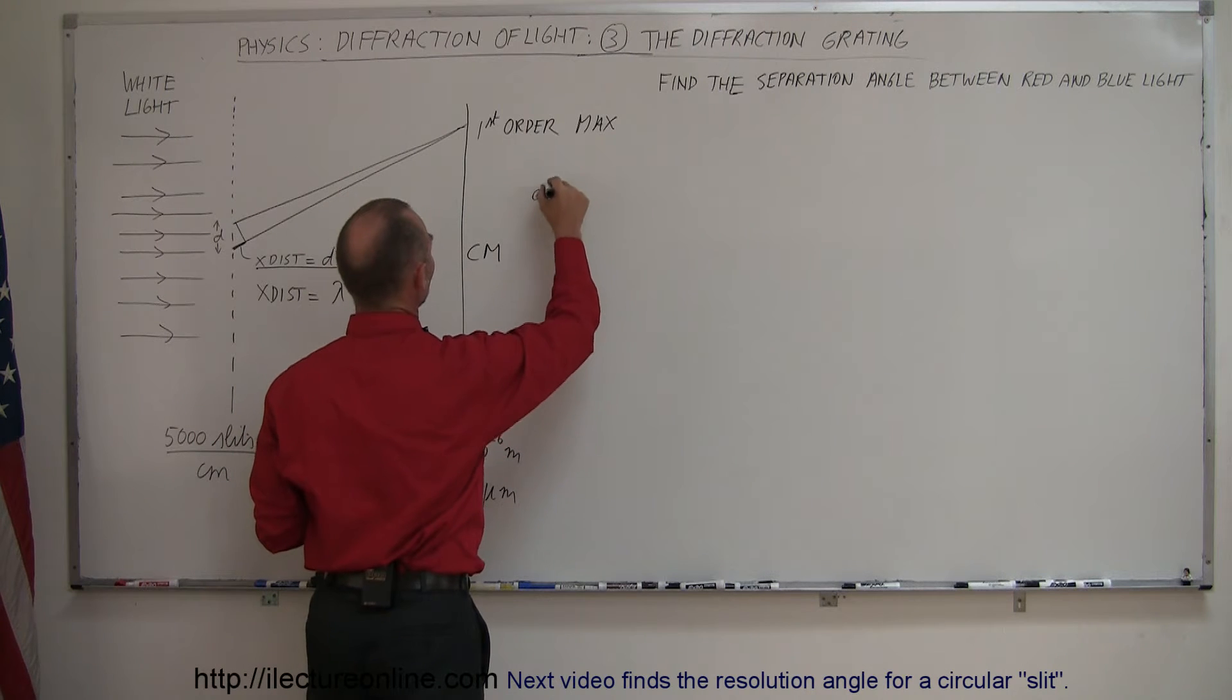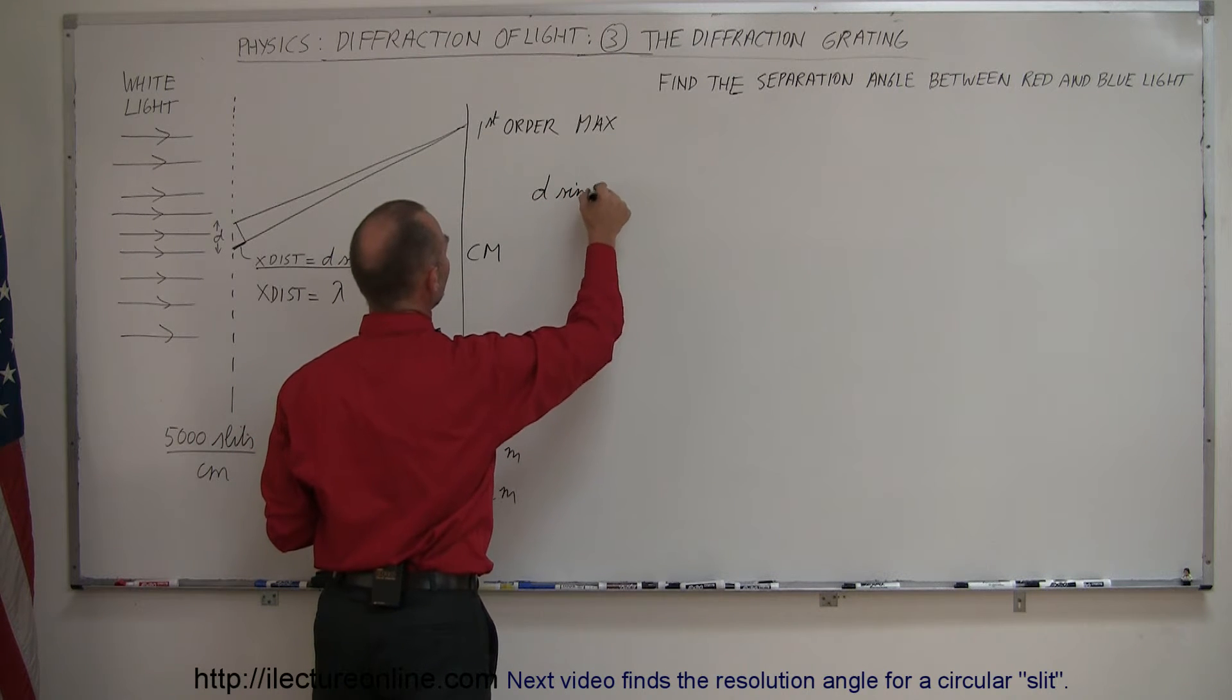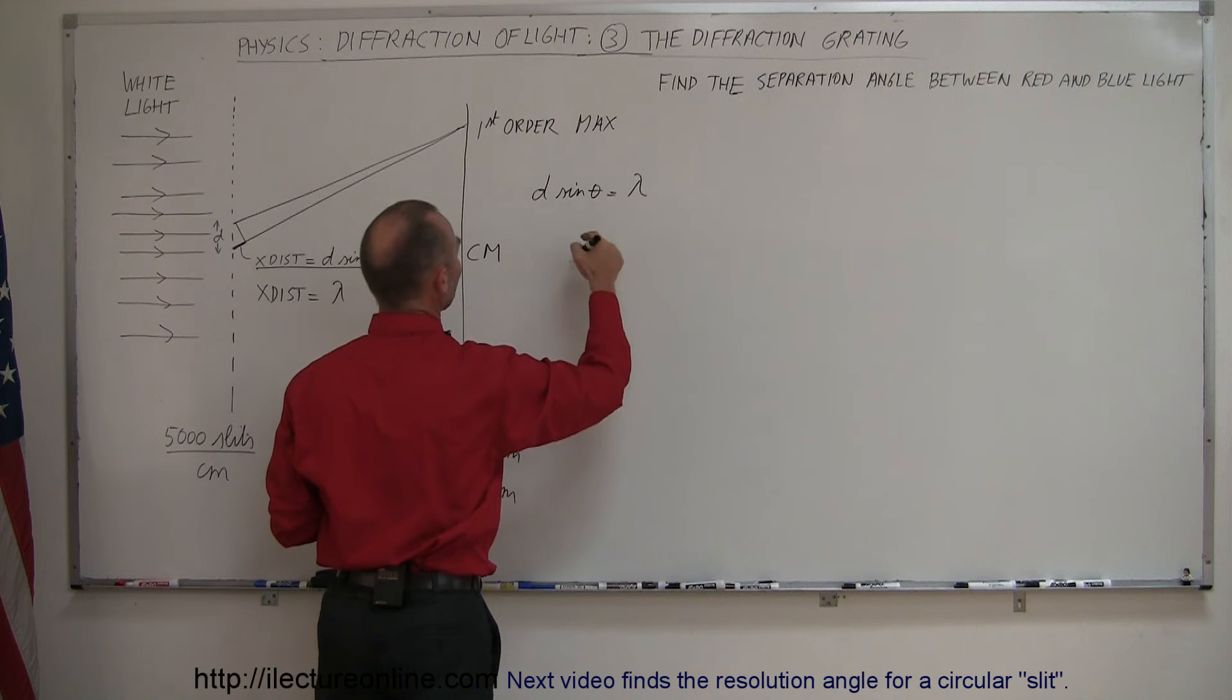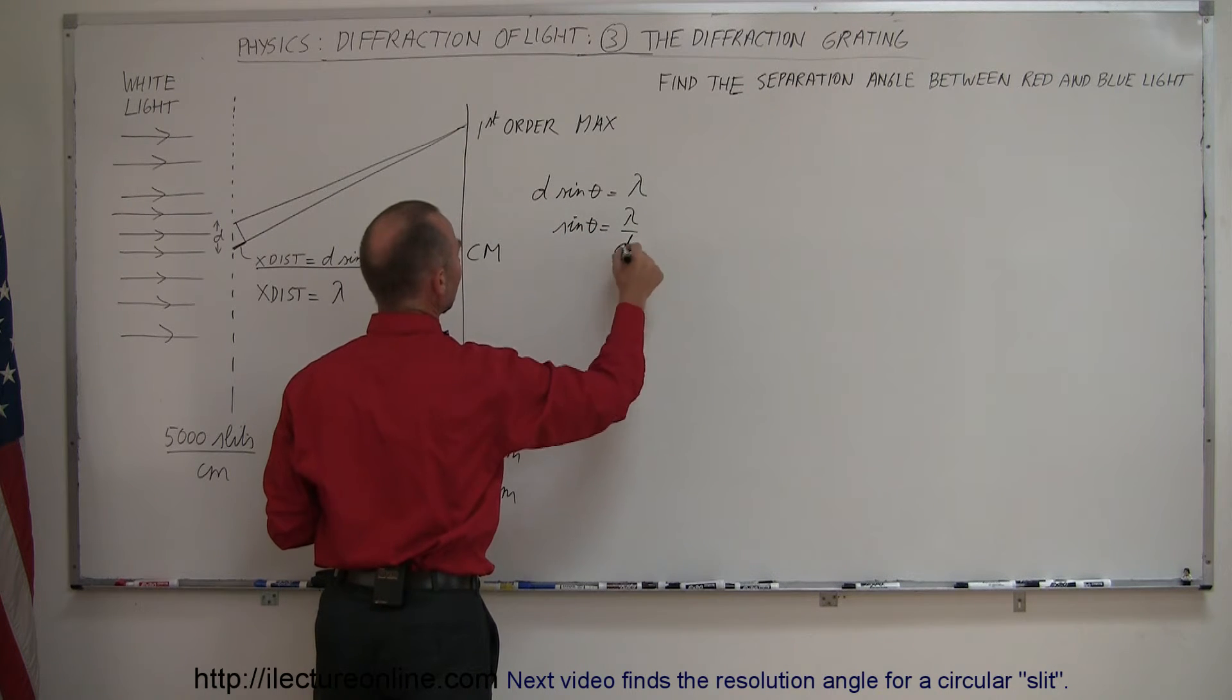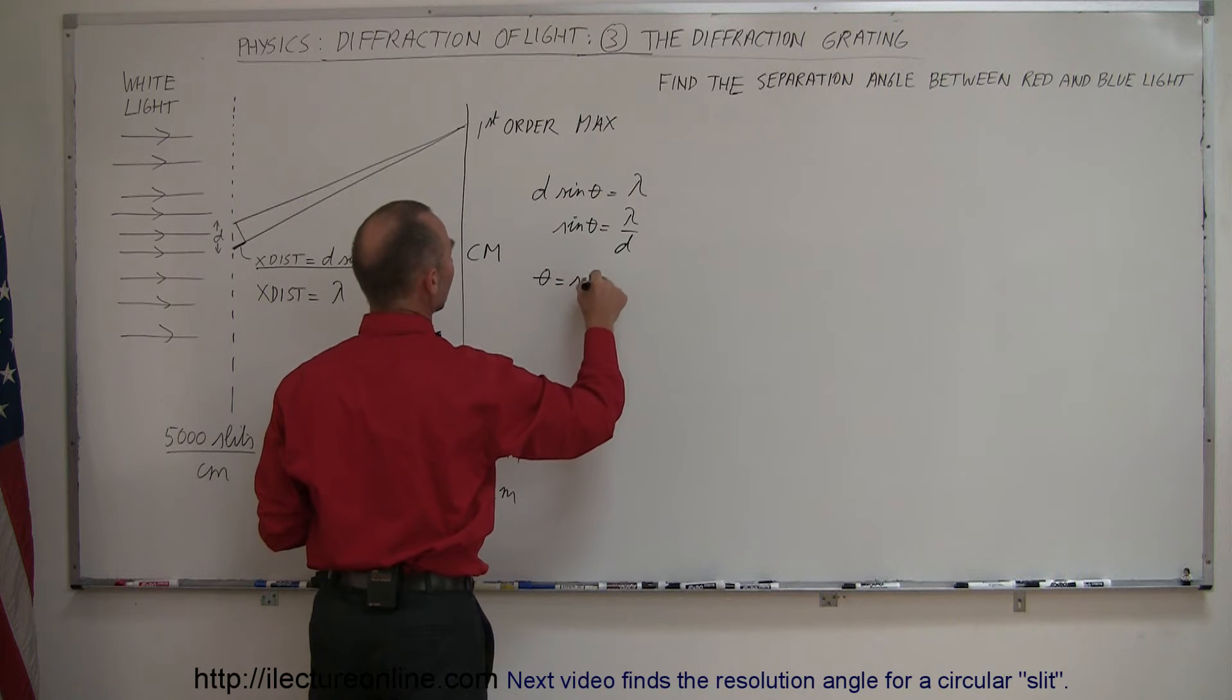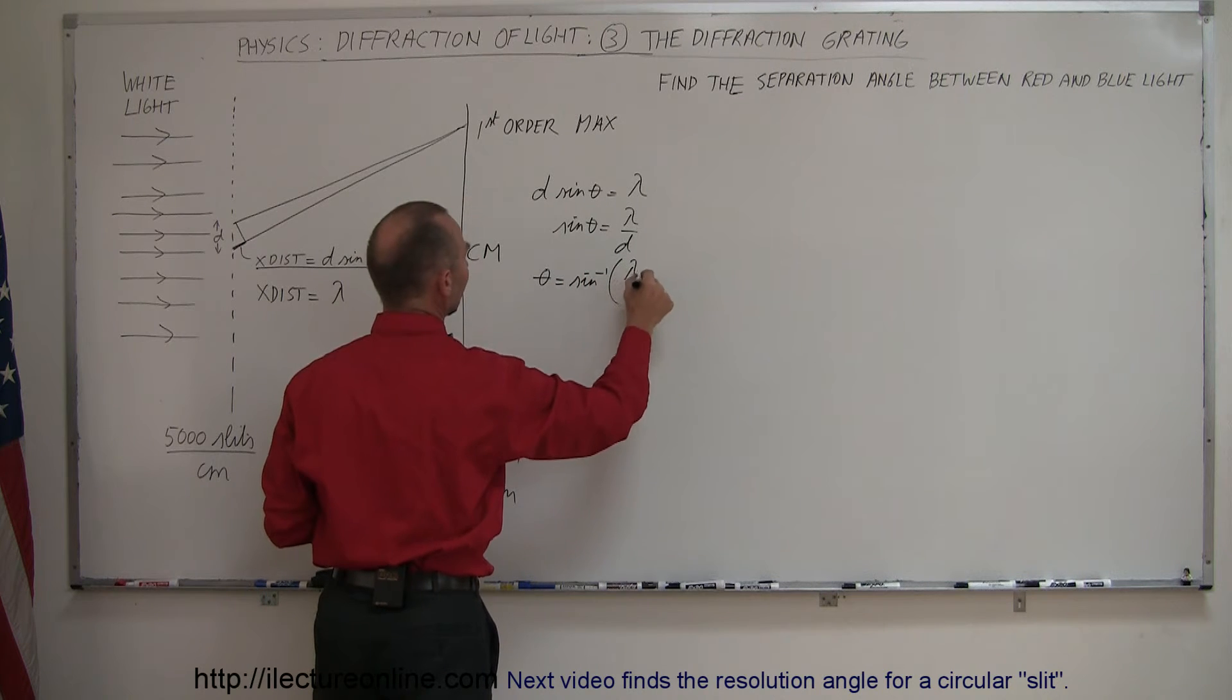So we're going to set the extra distance equal to a single wavelength to find the first order max. So set those two equal to each other, we have d sine theta is equal to one lambda, so therefore sine of theta is equal to lambda divided by d, and theta is equal to the arc sine of lambda divided by d.